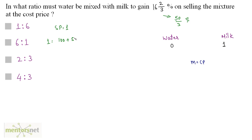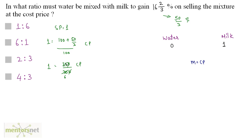So 1 equals (100 + 50/3) divided by 100, times the cost price — that is 350/3 divided by 100, which is 350/300 times the cost price. Therefore the cost price equals 6/7.